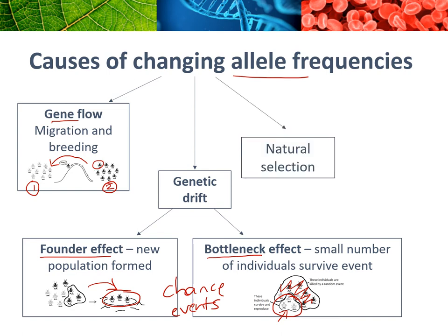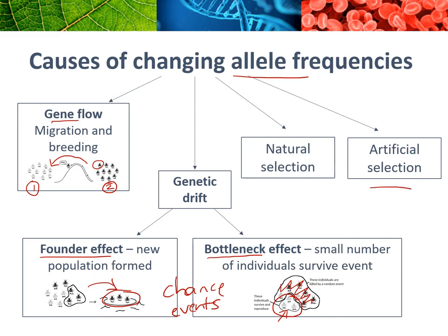Then there's natural selection, which we'll go through in a moment. And there's also artificial selection, used in agriculture and domestication of animals, which involves choosing beneficial organisms to breed — in that way, humans are impacting on the alleles.